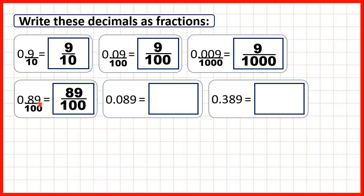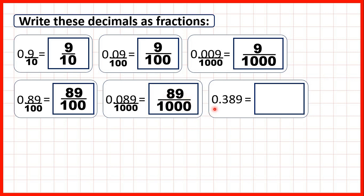Now 0.089. We have three digits after the decimal point, and the third digit is the thousandths digit. So we draw a line across from the decimal point and write a denominator of 1000. That gives us 89 thousandths, because eight hundredths is the same as 80 thousandths, and adding that to the nine thousandths gives us 89 thousandths.